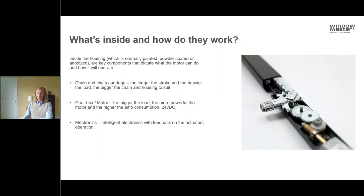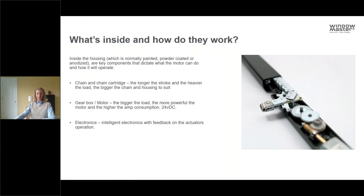If you've never seen the inside of a window actuator, here's a visual. You can see a slim housing on the outside, and inside, the chain folds in on itself when it retracts into the housing. The chain, the gearbox and motors that make the chain move, and the PCB electronics that provide intelligent movement and speed control of the chain — that's what's inside a chain-based actuator.